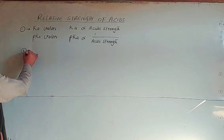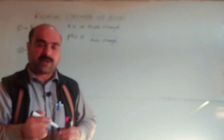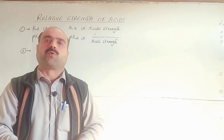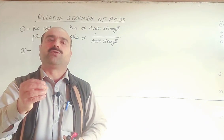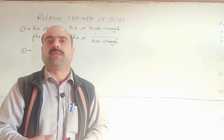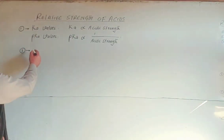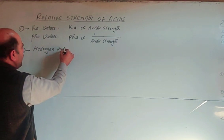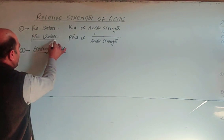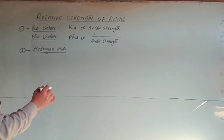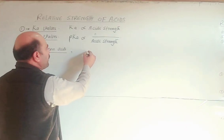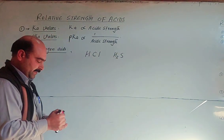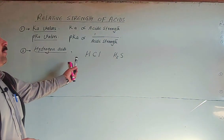Point number two: when comparing hydrogen acids — acids that contain hydrogen atoms, which provide protons — these are also called hydra acids or hydrogen acids, represented as HX. For example, HCl and H2S: which of these is the strongest acid? Both have hydrogen present; the difference is chlorine versus sulfur.